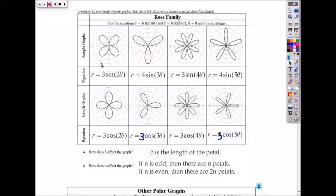Here's the rose family for polar graphs. As you can see, if it's sine, the first group, it's symmetrical on the y-axis, which we call pi over 2.